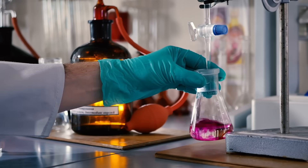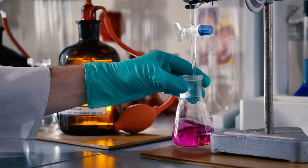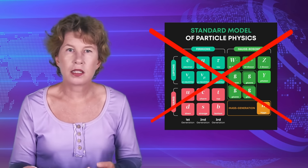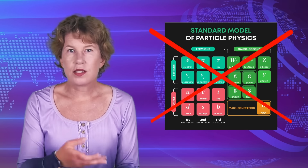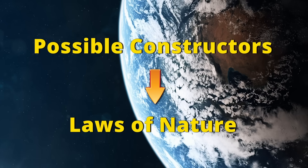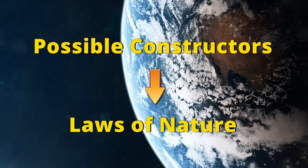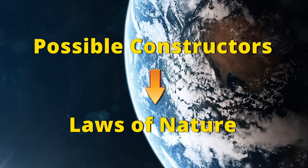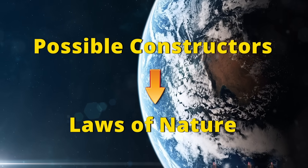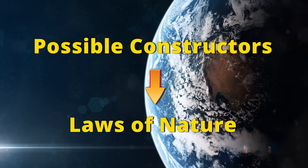A simple example for a constructor could be a chemical catalyst that facilitates a reaction. Constructors basically make things happen, and for this they need to have a certain level of complexity — they can't be single particles. Constructor theory is therefore emphatically not a reductionist approach. Rather, the idea is that all the fundamental properties of nature are contained in the types of constructors that our universe can bring about. If that sounds weirdly backwards, that's the point — it's a completely different way to think about physics.